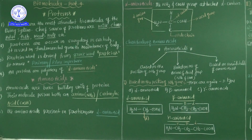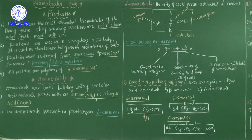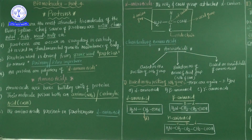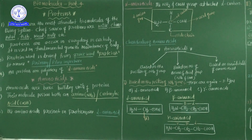Number one — glucose cyclic structure or Haworth projection structure. Number two — fructose cyclic structure and Haworth projection structure. That part is completed successfully. Now the second biomolecule is proteins, and complete information on proteins is coming up.